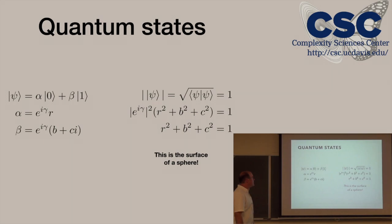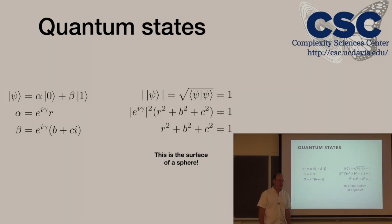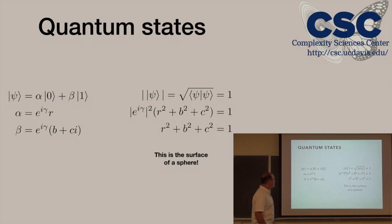We're going to stay in two dimensions — as small as we can without going to sleep. When you've got a quantum state sitting in two dimensions, people call this a qubit: 'bit' for binary, and 'q' for quantum. Qubit. Q-U-B-I-T.